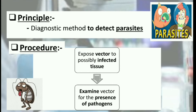The procedure is: we take a vector and we expose that vector to possibly infected tissue. After the exposure of the vector to possibly infected tissue, we examine the vector for the presence of pathogens. If the pathogens or parasites are present in the vector, then our diagnosis is positive.